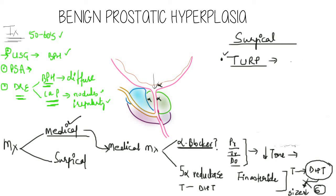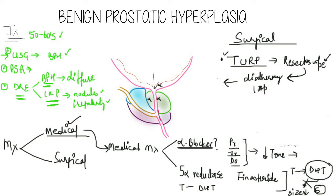In TURP, the surgeon inserts a resectoscope into the urethra. The resectoscope has a diathermy loop mounted on it, which is used for cutting. This diathermy loop cuts the prostate gland into pieces and removes it through the urethra, so the excess prostate tissue compressing the urethra is removed and the diameter of the urethra increases.